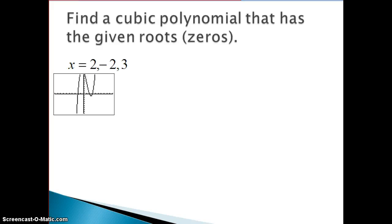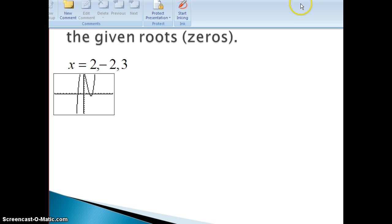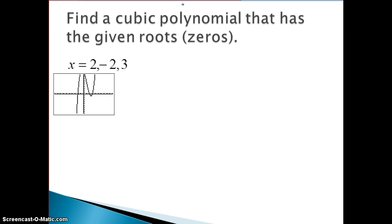This is a little review of how to find a polynomial when you are given the roots. In this example, this is a review of what we saw from our earlier units — section 6-2. When you're given roots, this is what the graph would look like. There's a positive 2, a negative 2, and a positive 3. When you're given the roots, the first thing you have to do is write your roots in factored form.